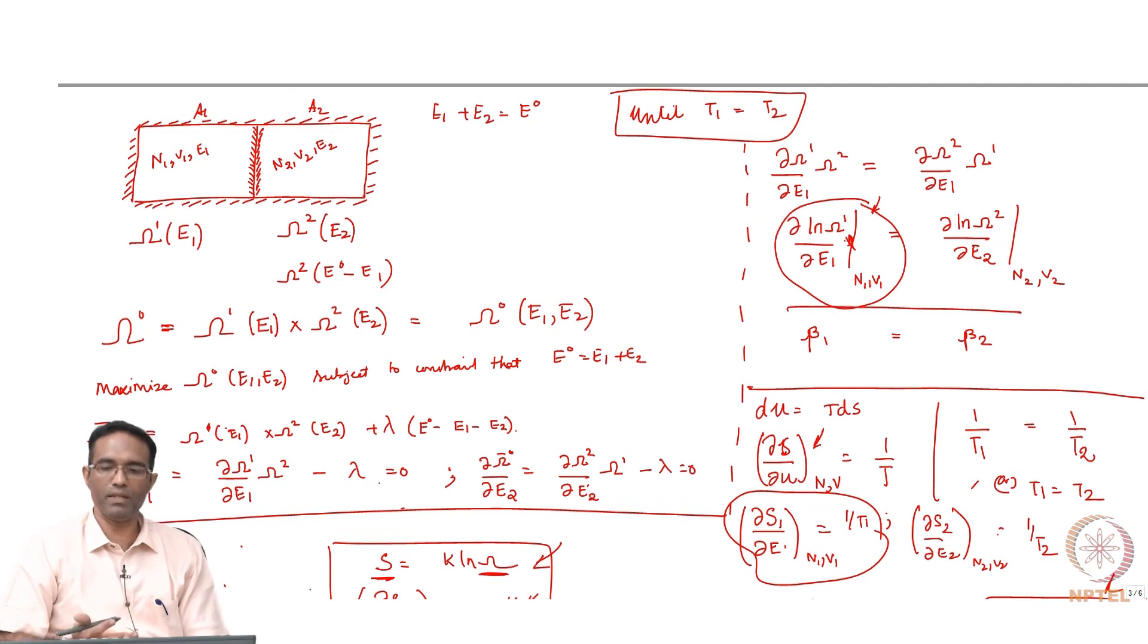The basic spirit is this: once you know this omega, then you can also find things like Gibbs free energy, Helmholtz free energy, and all these energies and all your properties of the system are in some way only derivatives of these quantities.